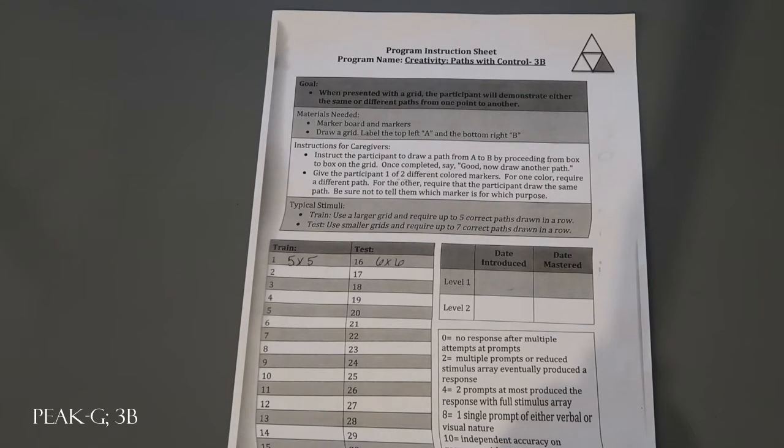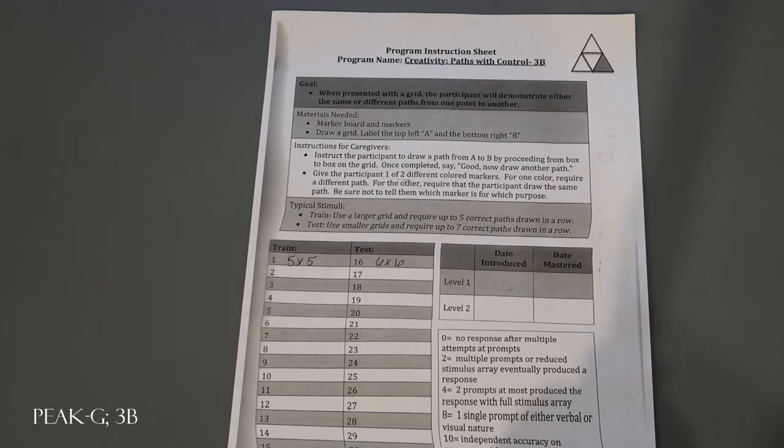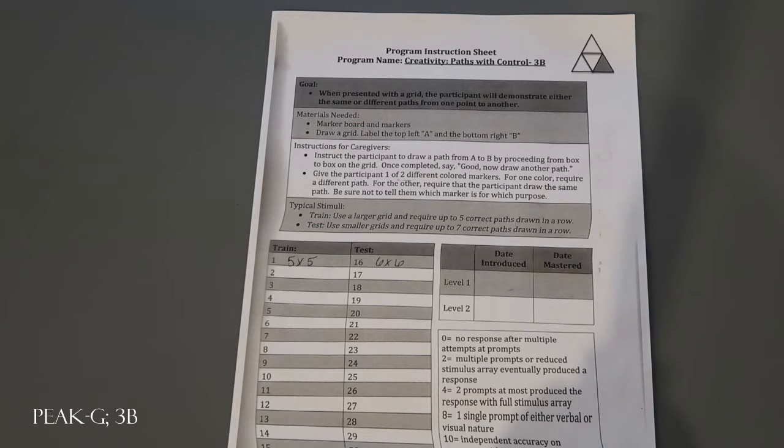Alright, I'm going to do a quick material demonstration for Creativity Path with Control 3B from PEAK Generalization. For this program, you're just going to need that grid paper that we've used for other Path with Control programs like 14I.